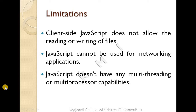Multiprocessor and multi-threading capabilities: multi-processing means more than two processes. Multi-threading allows a single process to have multiple code segments — that is multi-threading. These are the limitations.